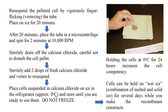The temperature should be approximately 0 degrees centigrade. Store the cells until you are ready to use them — do not freeze the sample. Holding the cells at 0 degrees for 24 hours increases cell competency. Cells can be held on wet ice, a combination of melted or solid ice, for several days while you are making a recombinant construct.